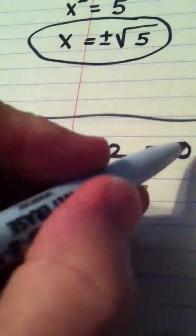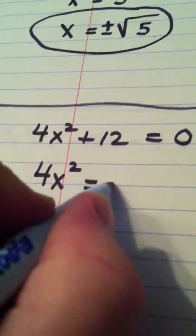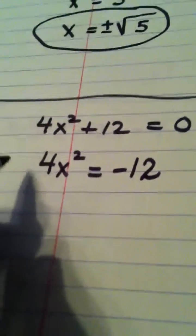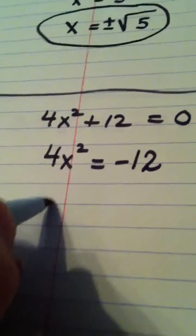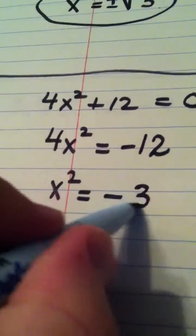So my first step is going to be to subtract 12. So I have 4x squared equals negative 12. My next step will be to divide both sides of the equation by 4. x squared is equal to negative 3.